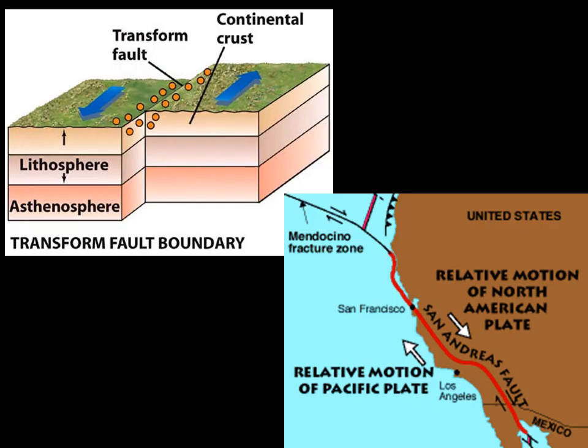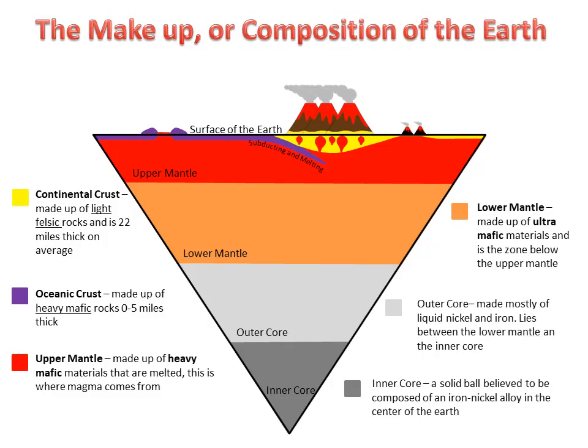Finally, we look at transform plate boundaries. This happens when two plates slide past one another. This is the type of boundary the San Andreas Fault represents. This is a diagram of the makeup or composition of the earth, along with a little tectonic information. We will start at the bottom and work our way to the top. We start with the inner core, or the center of the earth, which is a solid ball believed to be made of an iron-nickel alloy.